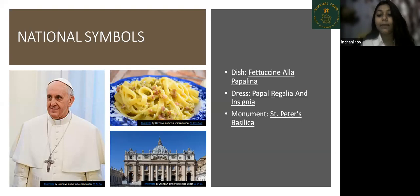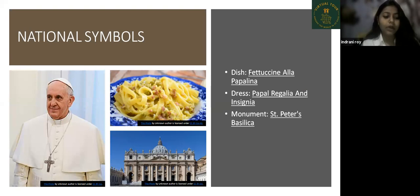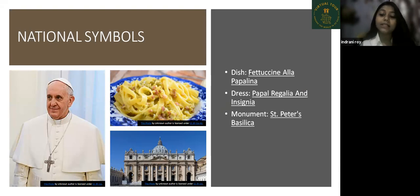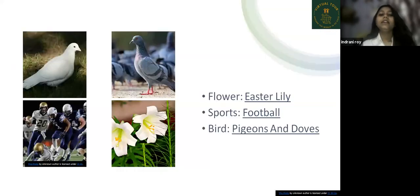Next are the national symbols. The national dish of Vatican City is Fettuccine alla Papalina — a creamy pasta dish. The national dress is Papal Regalia and insignia, which you can see in the picture. The monument is St. Peter's Basilica. The national flower is the Easter lily, the sport is football, and the national bird is the pigeon and dove.